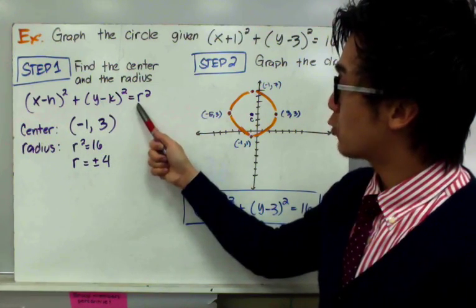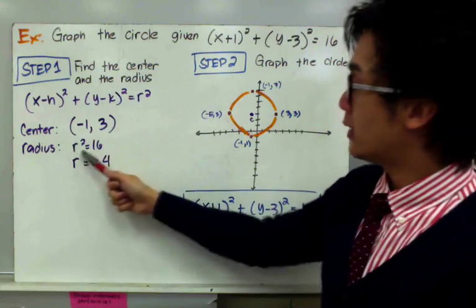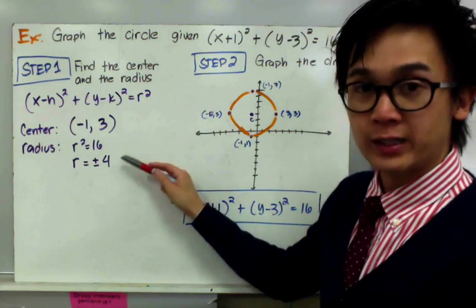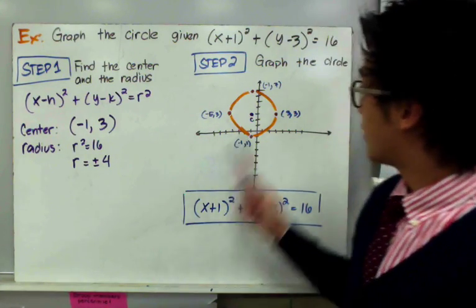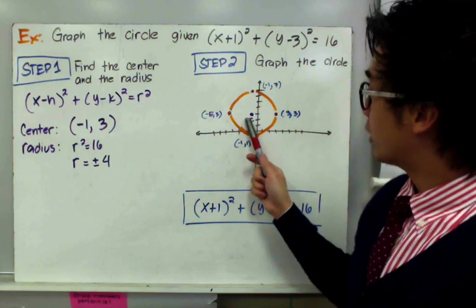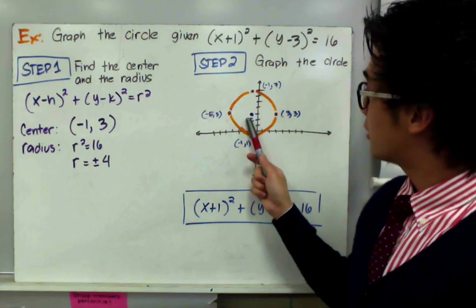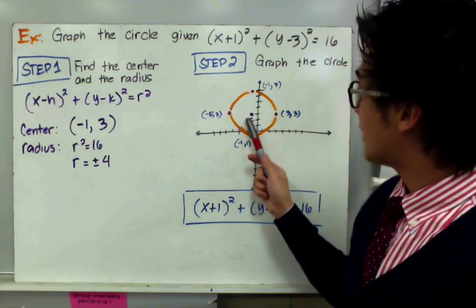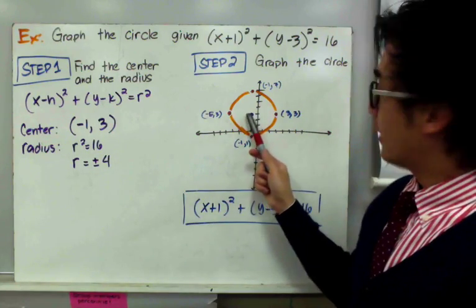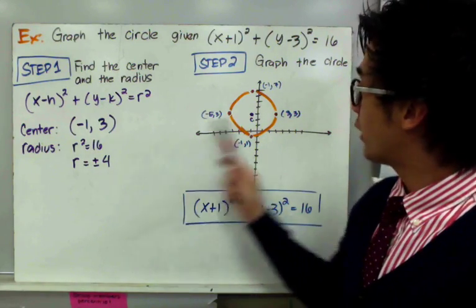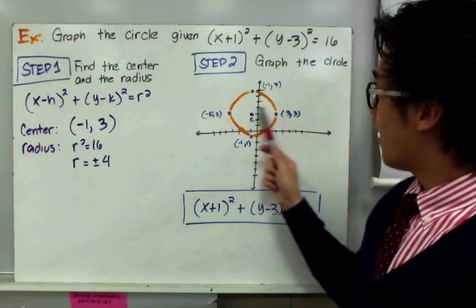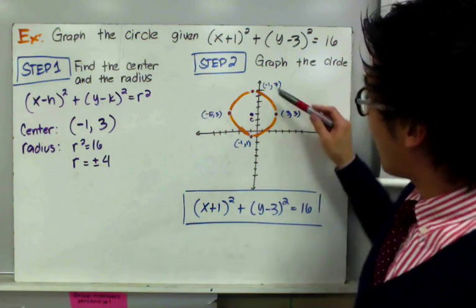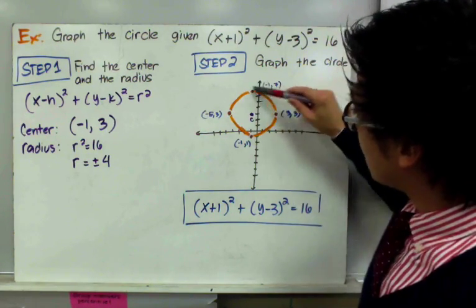With r² = 16, the radius r = ±4. Now we're ready to graph the circle. Plot the center first at (−1, 3), then count 4 units to the left, 4 units to the right, 4 units up, and 4 units down from the center to get the 4 points that form the circle.